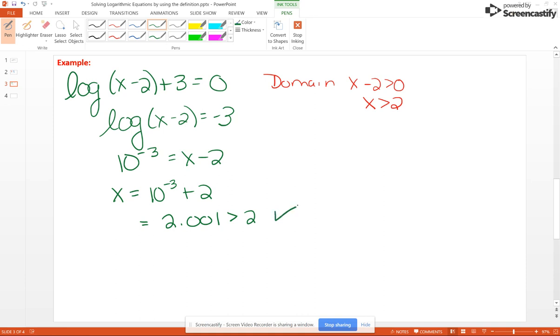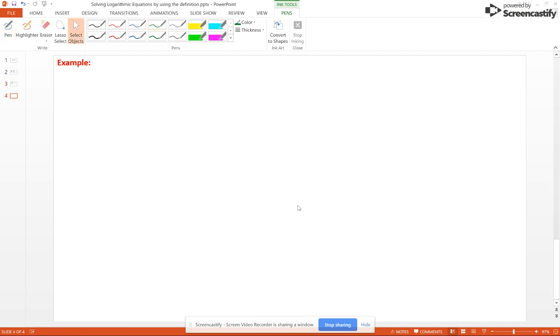Now let's look at another problem. Say that we have 6 times the natural log of x plus 5 minus 2 equal 1. My domain here is going to be where x plus 5 is greater than 0, which will be where x is greater than negative 5.